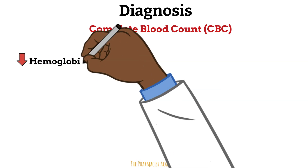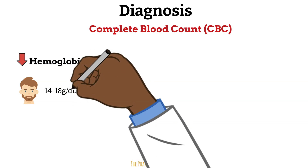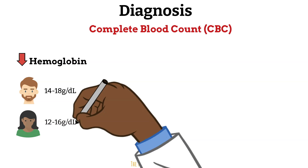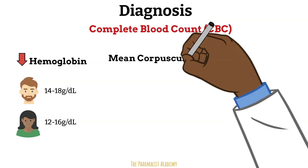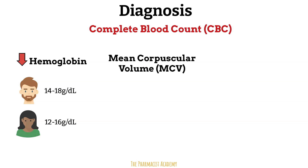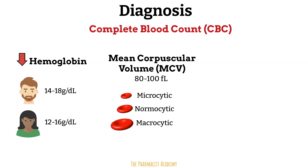First is hemoglobin — we should see low hemoglobin. In males, the normal level is 14 to 18 grams per deciliter, and for females, 12 to 16. Anything less than those values is considered anemia. The mean corpuscular volume, or MCV, measures the average size of the red blood cells. If MCV levels are low, we refer to that as microcytic anemia; if normal, normocytic anemia; if elevated, macrocytic anemia. Most patients with iron deficiency anemia will present with microcytic anemia, but some may also have normocytic anemia.